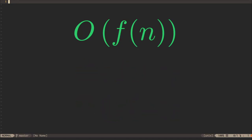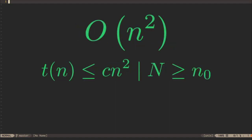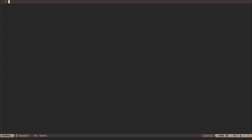The Big O notation means that we can find positive constants that satisfy an inequality. For whatever f is, we can find a value of n beyond which our algorithm's runtime is always less than f. For example, if f is n², this means we can find a value of n beyond which the running time is always less than n² times whatever the positive constant c is. It doesn't matter what the values of c and n₀ are. If we can find them, then the inequality has been satisfied.